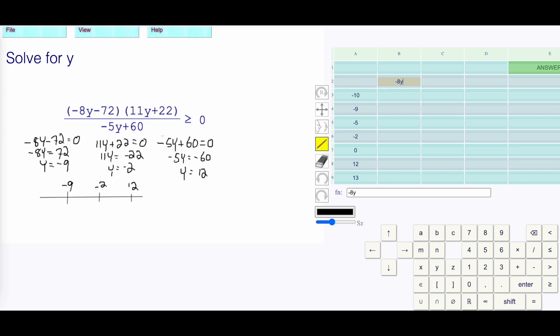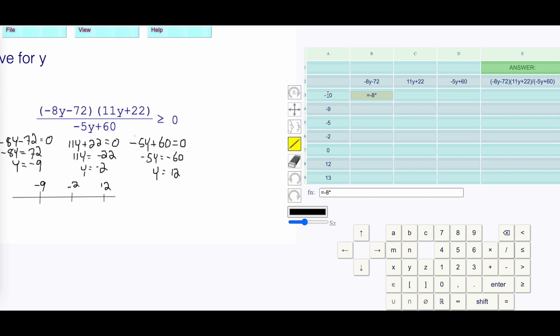This is -8y-72. This is the 11y+22. -5y+60. Then we're looking at the whole thing. -8 times the y value minus 72, fill that down. Here's our 0 is equal to 11 times the y value plus 22, fill those down. Is equal to -5 of y value plus 60, and then fill those down.